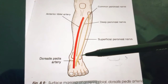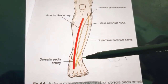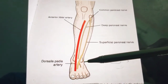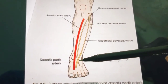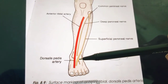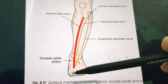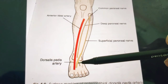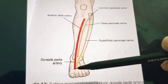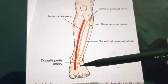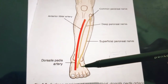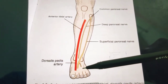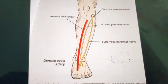At the junction of the upper two-thirds and lower one-third of the leg, the nerve pierces the deep fascia to become superficial and divides into the medial and lateral branches. You can see here exactly at this junction it pierces the deep fascia — this is the medial branch and this is the lateral branch of the superficial peroneal nerve.